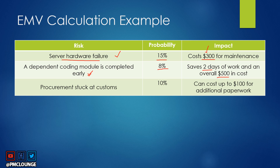Risk three is procurement being stuck at customs. There is a 10% chance of this happening, and if it does it will cost up to $100 for additional paperwork. So these are the three risks, each with their probability and dollar impact. In the Probability and Impact matrix you may already have the probability — if you also have the impact in dollars, this is how you calculate EMV.